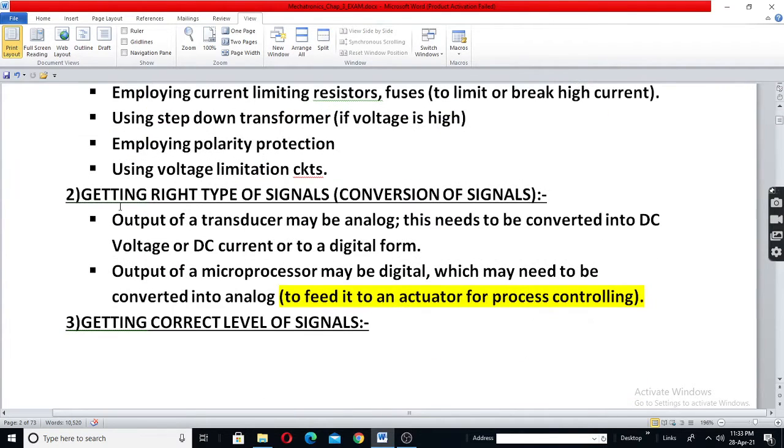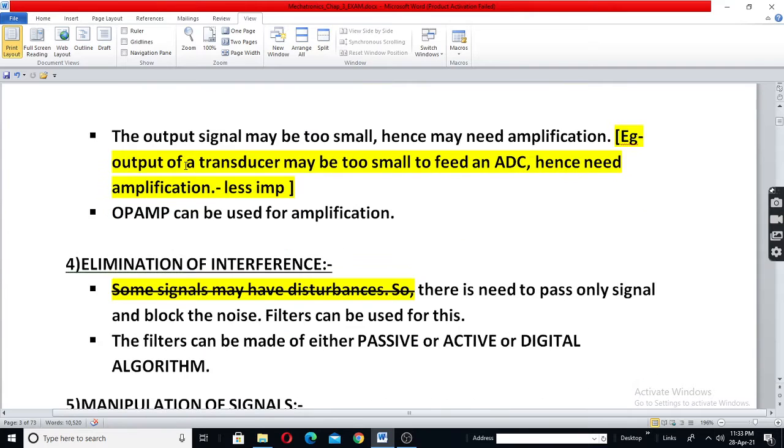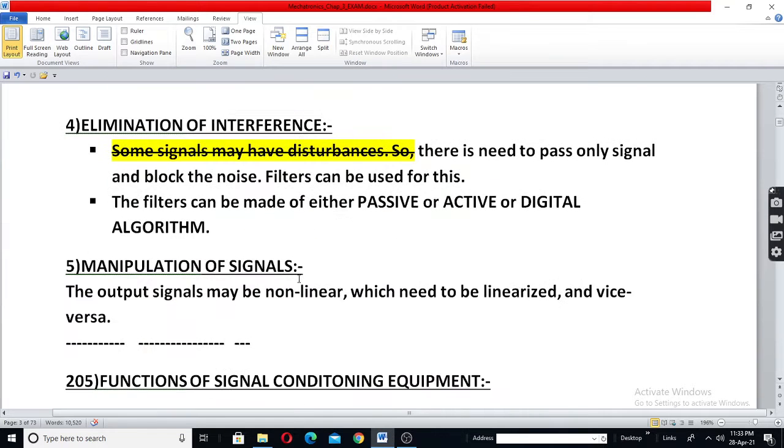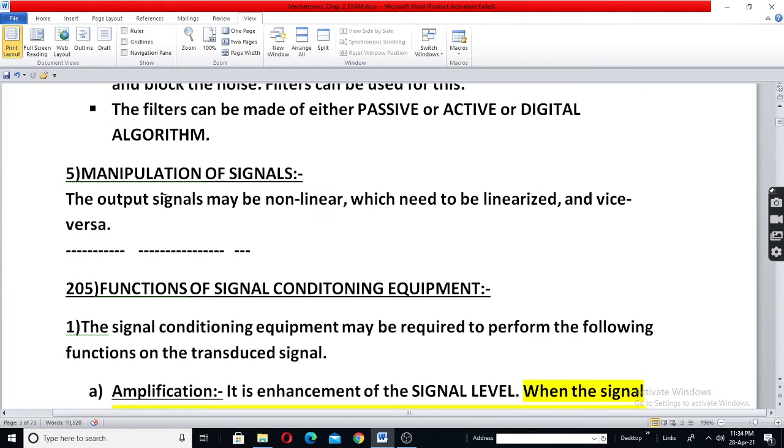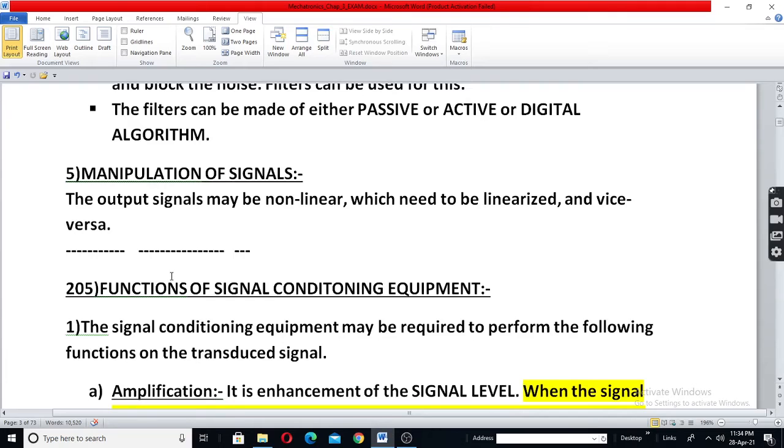So protection and then analog to digital, digital analog conversion is done there, getting right level of signals, and then elimination of interference. These things are there and again manipulation of signals. So how cooking is done means how these things are done by all these things.